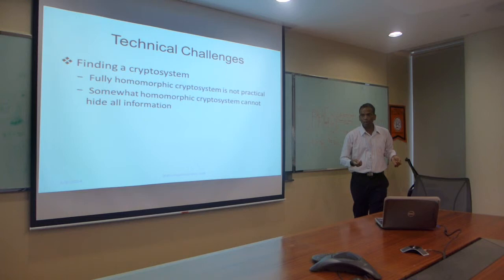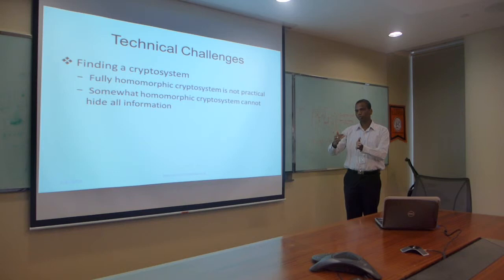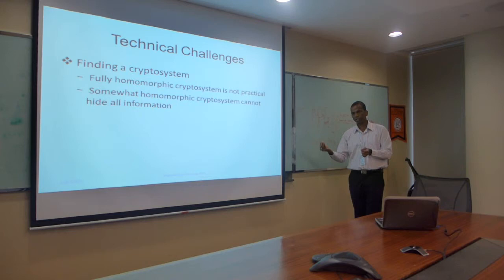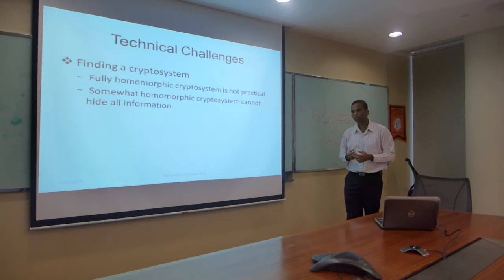An interviewer asks: can you explain what you mean by a homomorphic cryptosystem? A homomorphic cryptosystem means we encrypt the data or image, and then we want to perform certain operations on the encrypted domain. Those operations must be supported, meaning when you perform the operation on the encrypted data, the processed encrypted data should decrypt to give the same result as if you had processed the original data. The interviewer confirms: so you can apply processing algorithms to the encrypted data and get the same result?